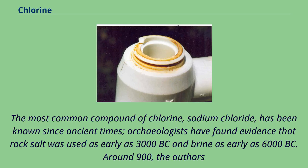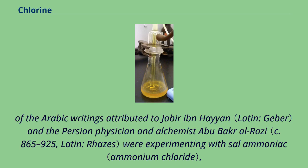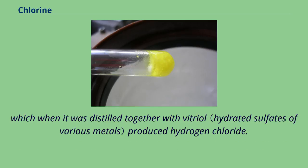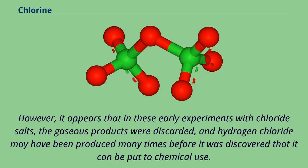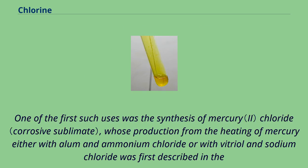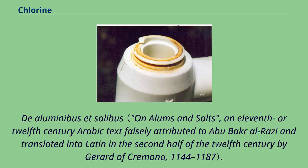Around 900 AD, the authors of Arabic writings attributed to Jabir ibn Hayyan and the Persian physician and alchemist Abu Bekir al-Razi were experimenting with salammoniac, which when distilled together with vitriol produced hydrogen chloride. However, it appears that in these early experiments with chloride salts, the gaseous products were discarded, and hydrogen chloride may have been produced many times before it was discovered that it can be put to chemical use. One of the first such uses was the synthesis of mercury chloride, whose production from the heating of mercury either with alum and ammonium chloride or with vitriol and sodium chloride was first described in the d'aluminibus et salibus.